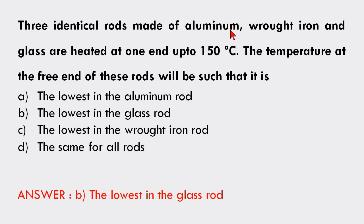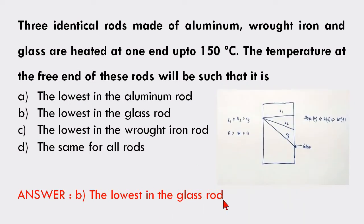Three identical rods made of aluminum, wrought iron, and glass are heated at one end to 150°C. The temperature at the free end is lowest in the glass rod, because the thermal conductivity of glass is lesser compared to aluminum and wrought iron. If you see this image, you will get a clear idea — glass has lesser thermal conductivity, so the slope is larger and the temperature difference is high. The temperature at the free end is lesser for materials with low thermal conductivity — that is, the glass rod.